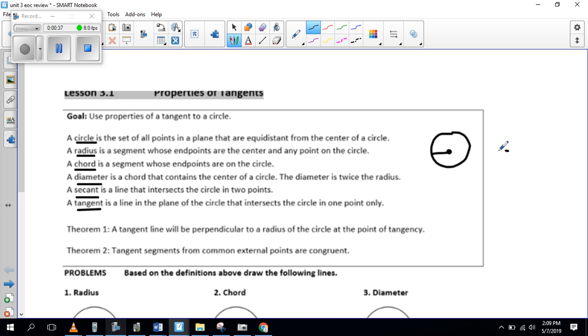A chord, endpoints are on the circle. A diameter is a chord. So don't forget that a chord is not necessarily a diameter because for a diameter, it has to go through the center. So here's your diameter. The endpoints are on the circle, but the diameter has to go through the center. So that's your diameter.